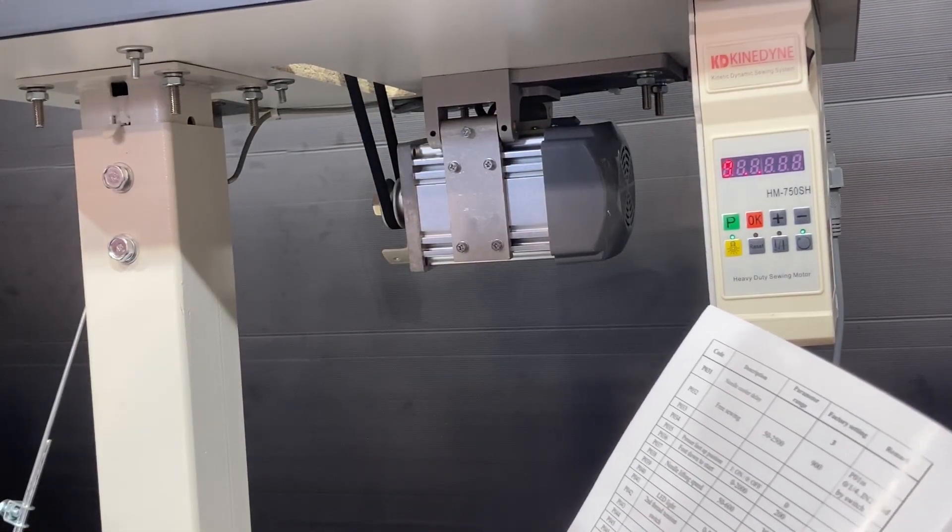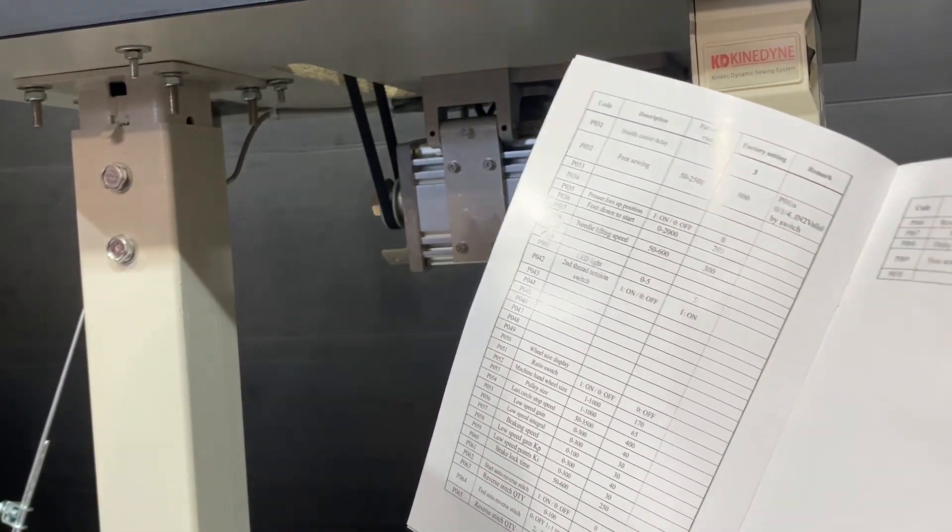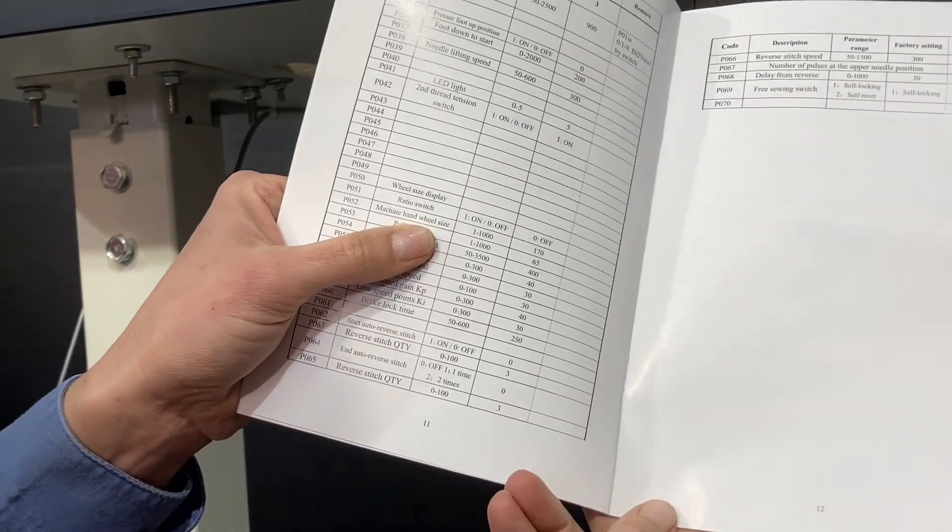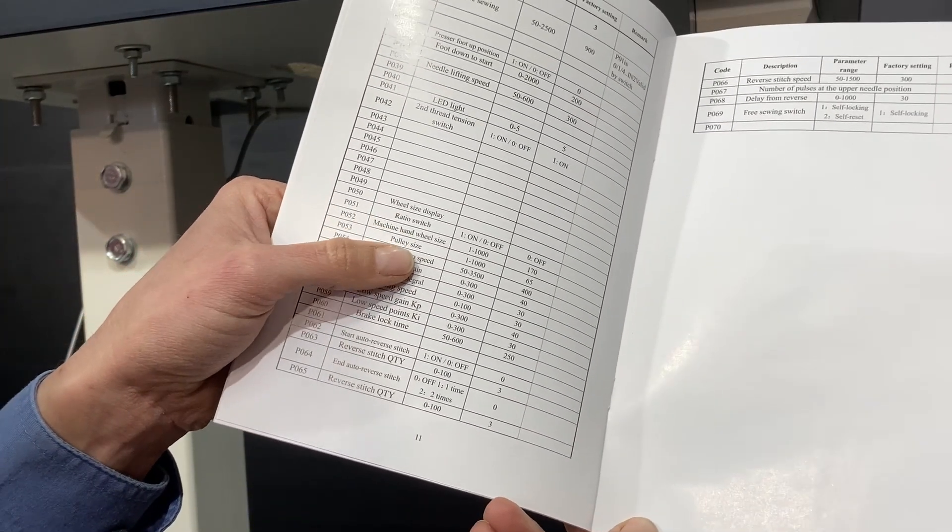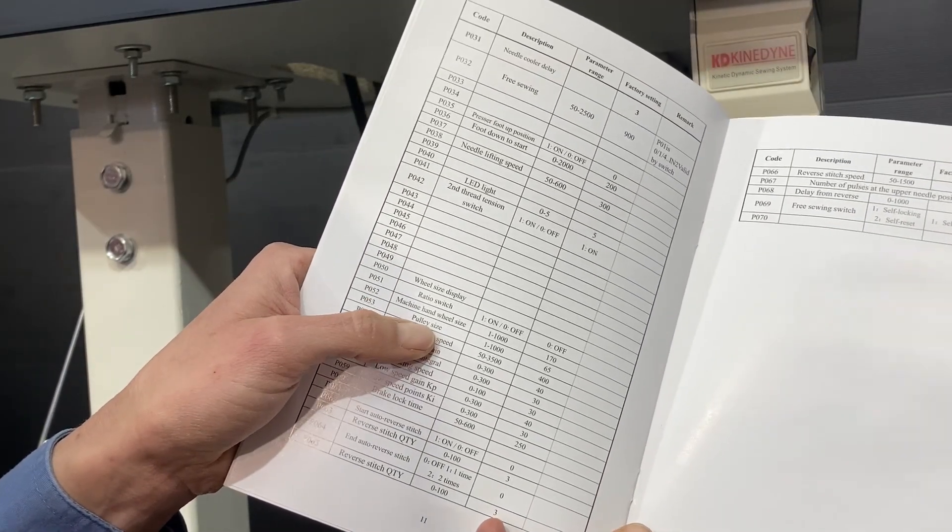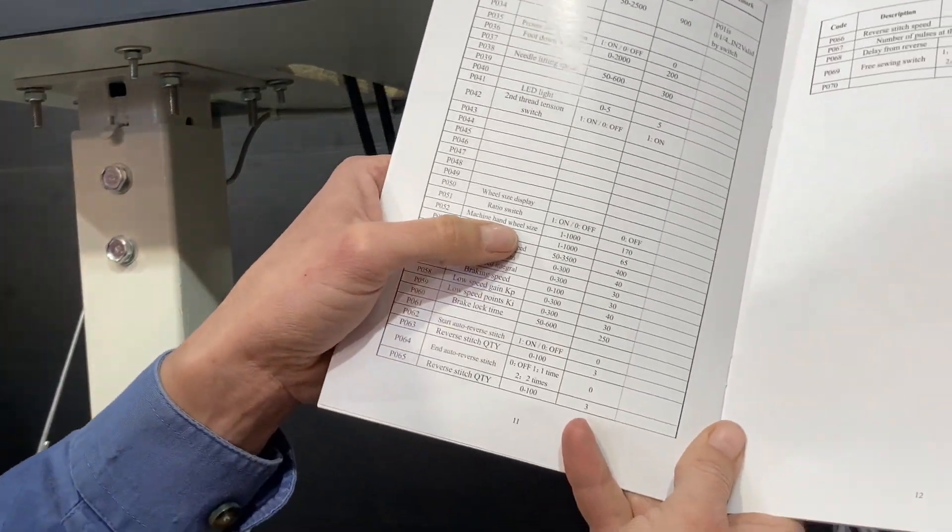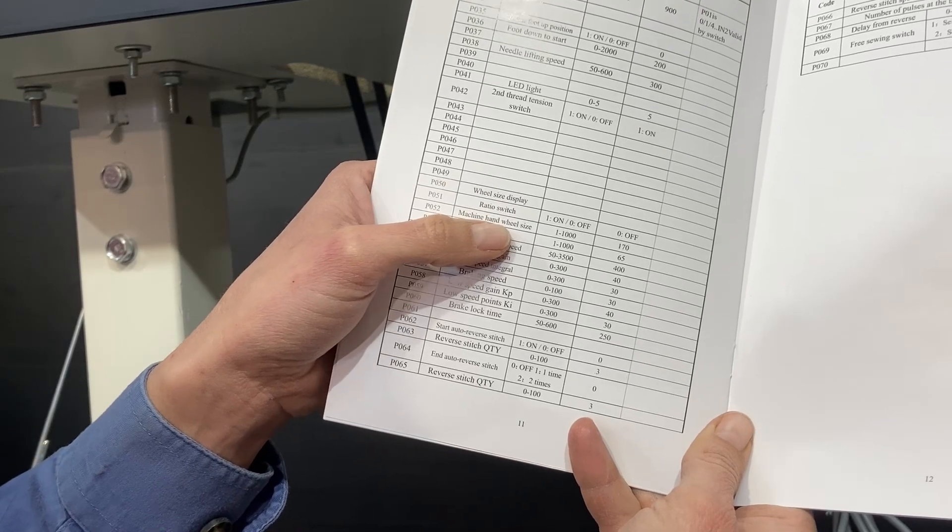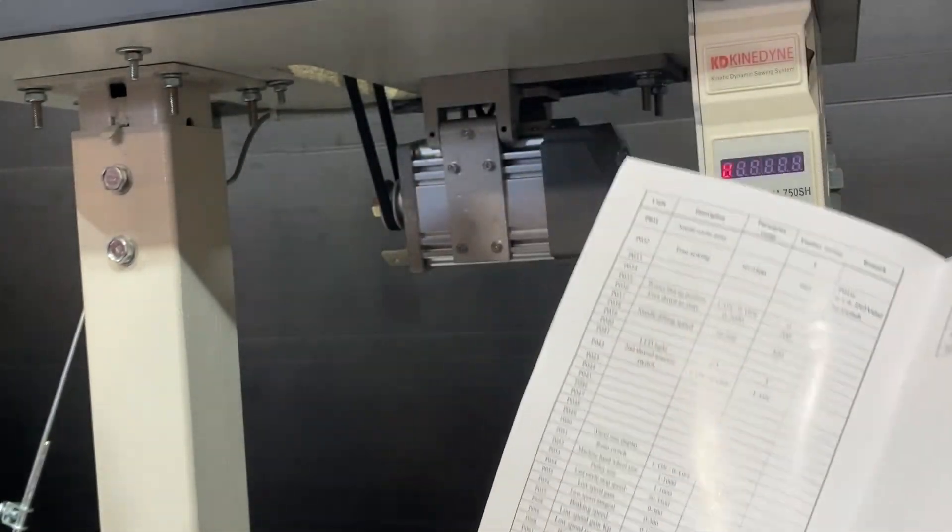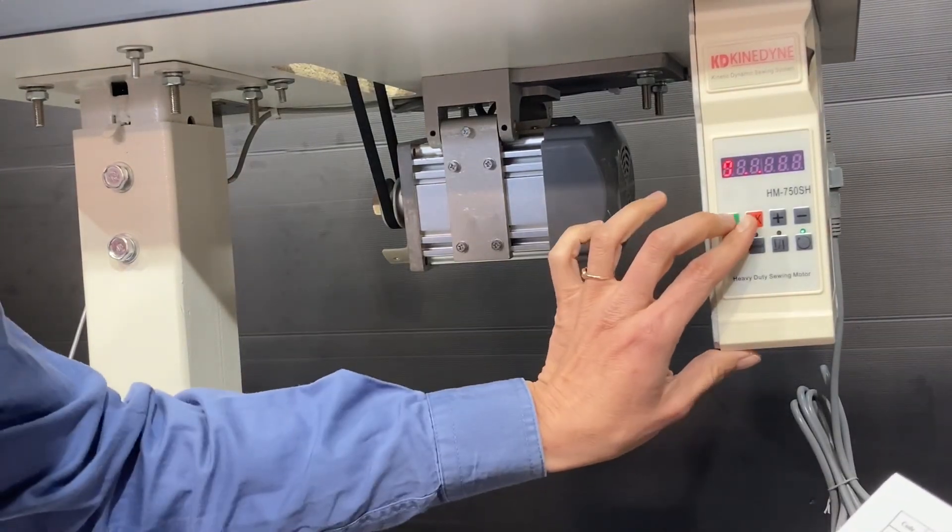One other thing that you may want to change, if you've bought one of these motors and put it on a sewing machine: the machine hand wheel size and the pulley size. So often the pulley size on these motors is 45mm, and then obviously the machine hand wheel size is whatever the diameter of the flywheel is on your sewing machine. So we'll just double check this one that the pulley size is entered right. So that is parameter 53.